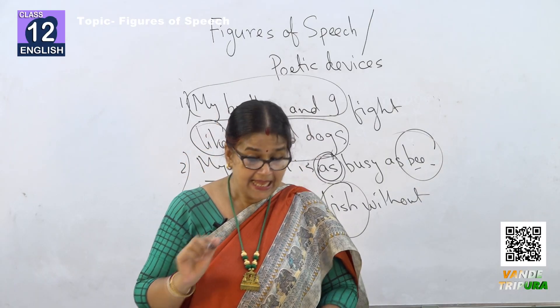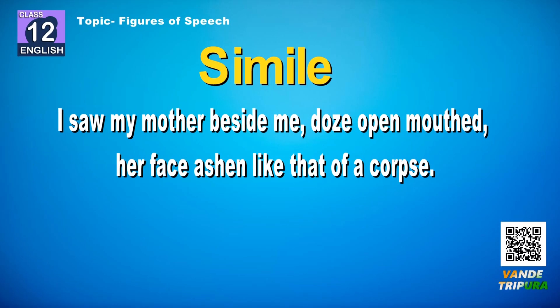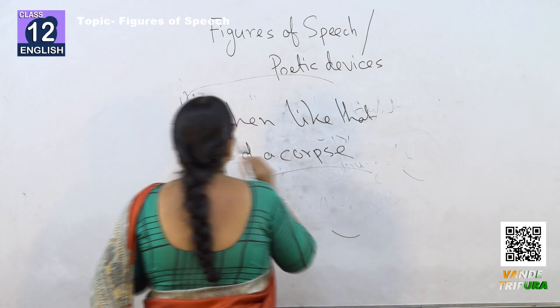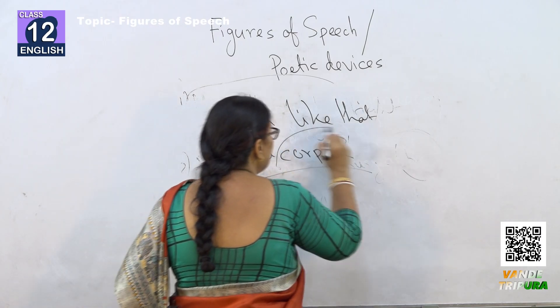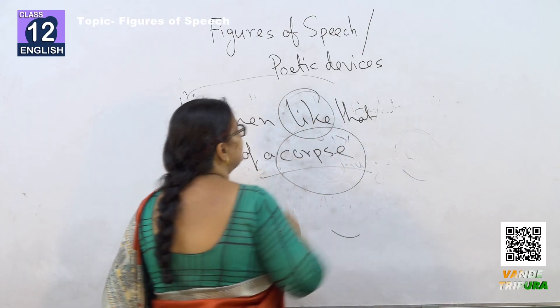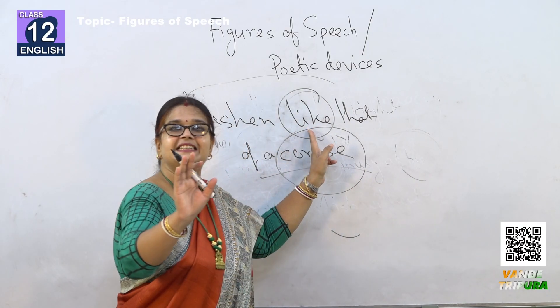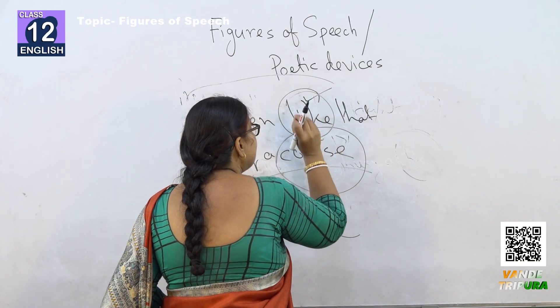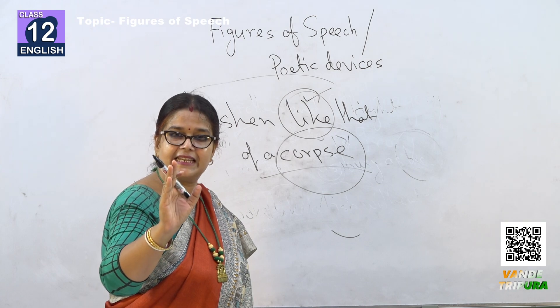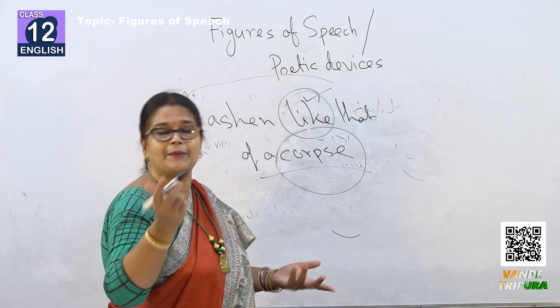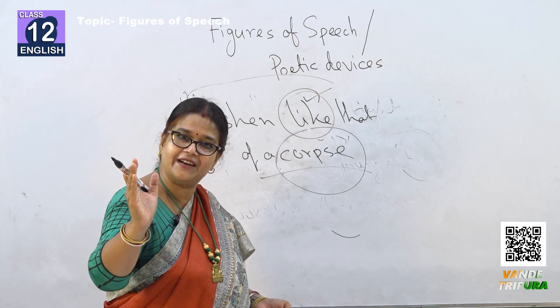Now look at our poem 'My Mother at 66.' There is a line: 'I saw my mother beside me, doors open, mouth and face ashen like that of a corpse.' The word 'like' is present — so whenever we find this in a line, we immediately identify it as a simile and write it alongside. Simile always requires 'as' or 'like.'